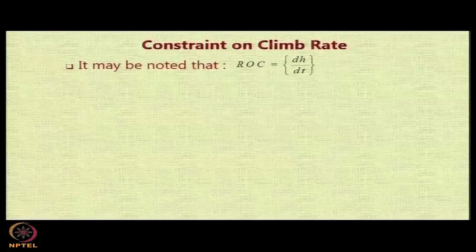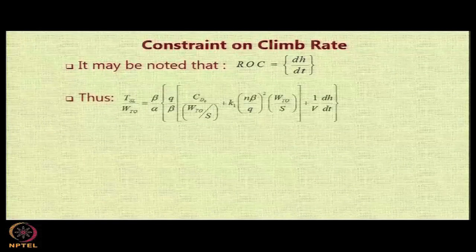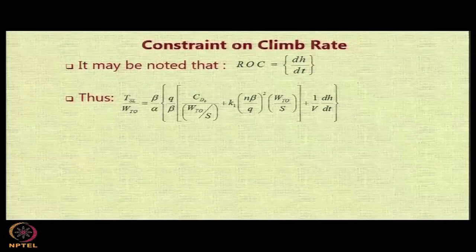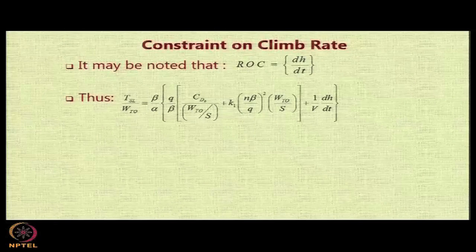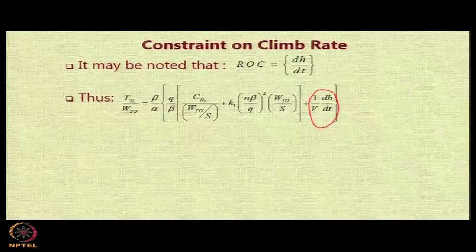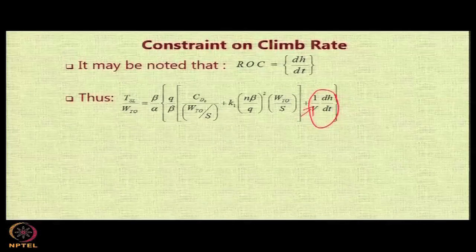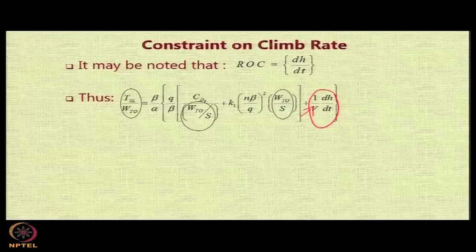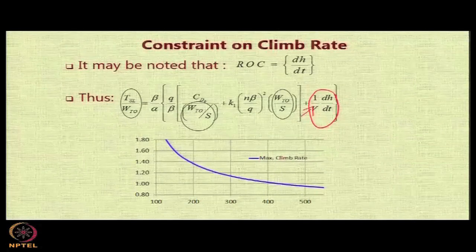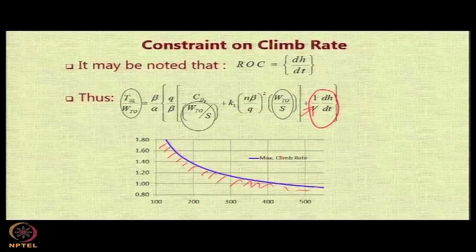Let us look at the constraint on the climb rate. The rate of climb is nothing but dH by dt, and therefore if I have a steady climb, then there will be zero value of dV by dt. The specified value of dH by dt at the specified climb velocity can be given in this expression to get the link between T by W and W by S. Once again, we have a curve where a max climb rate constraint can be shown in this form, and the area below this line is going to be the infeasible area; the area above this is going to be feasible.